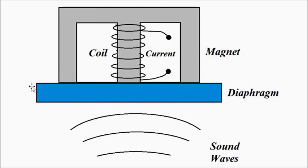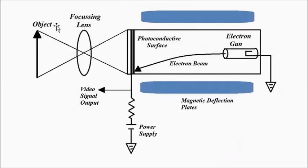There are different types of microphones with modifications in design and working principle. When we discuss a particular television system, the audio and video systems associated with it will be discussed separately. Next we have the transducer for video.